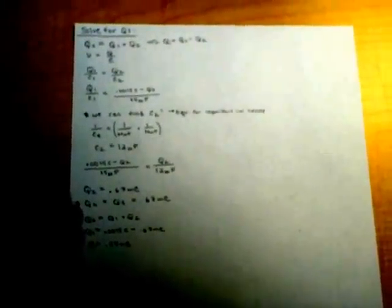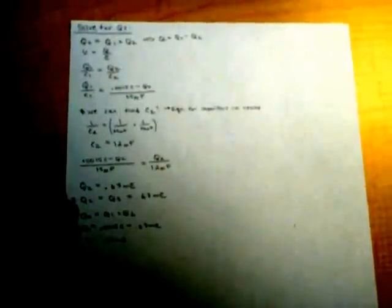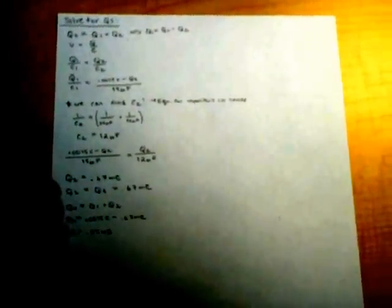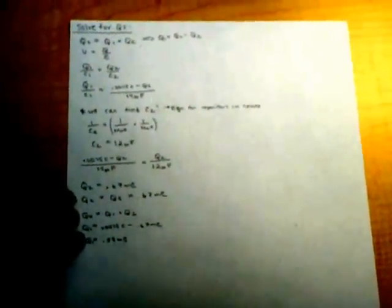Using one of our other equations, we get that the initial charge equals Q1 plus Q2, which means that Q1 equals 0.0015 coulombs minus 0.67 millicoulombs, so Q1 equals 0.83 millicoulombs.